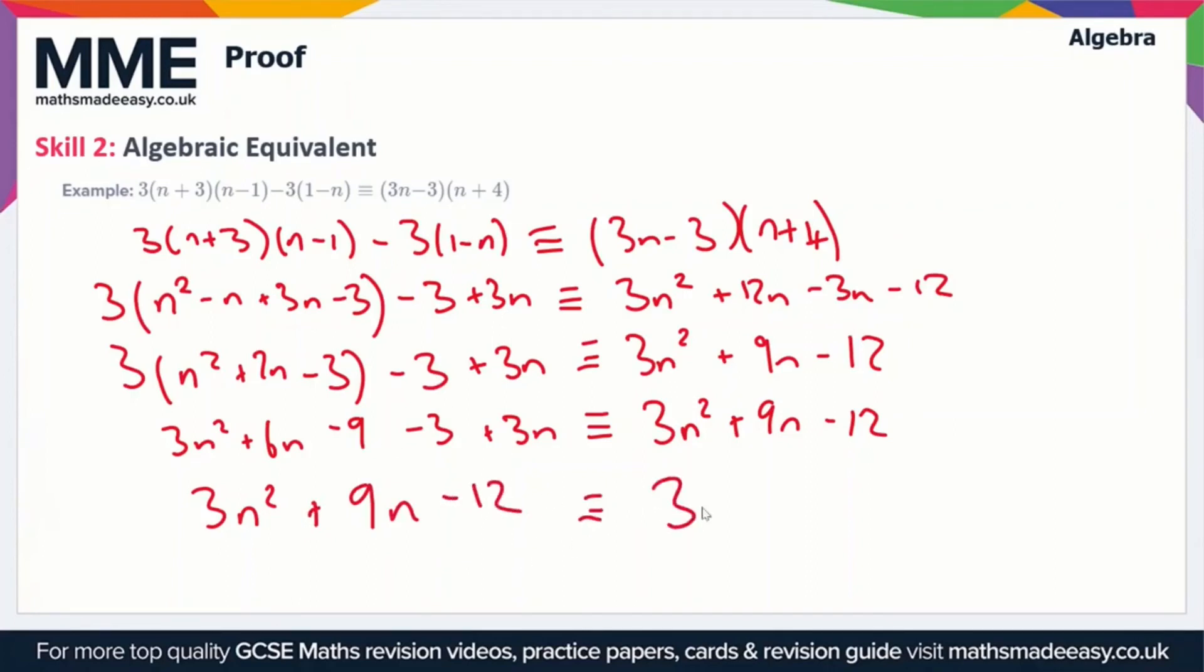So therefore this is equal to 3n squared plus 9n minus 12. So we've shown that the two sides are equal. So this is what you have to do when you're faced with an algebraic equivalent expression.